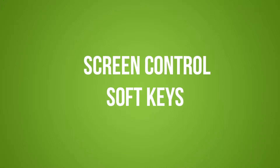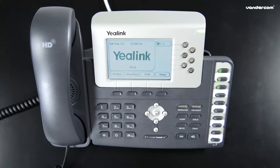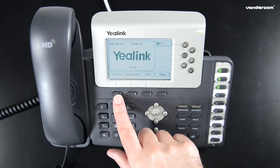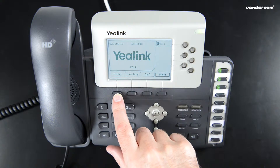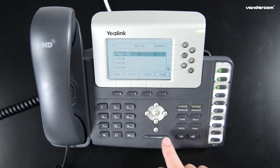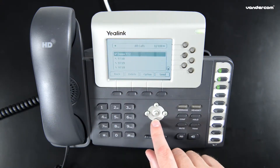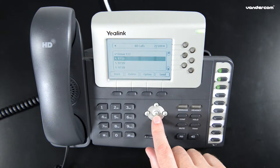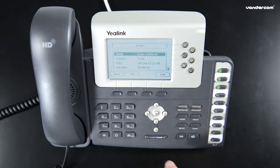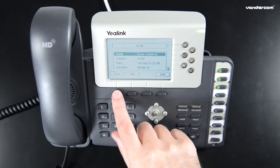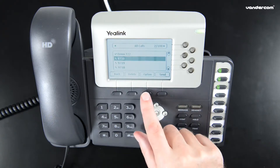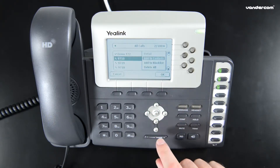Screen Control Softkeys. The History provides access to all placed, missed and received calls. Use the down arrow to select the number to call and press OK for the call details. Pressing the Option key allows you to add the number to a directory or a block list.